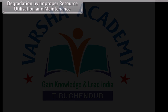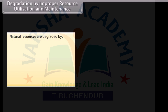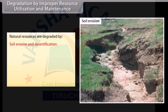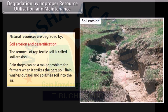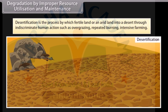Natural resources are degraded by soil erosion and desertification. The removal of top fertile soil is called soil erosion. Raindrops can be a major problem for farmers — when rain strikes bare soil, it washes out and splashes soil into the air. Desertification is the process by which fertile or arid land turns into desert through indiscriminate human actions such as overgrazing, repeated burning, and intensive farming.